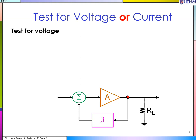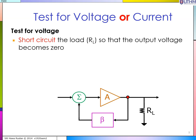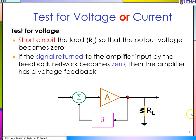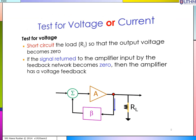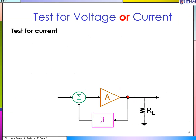For the test for voltage, you short-circuit the load RL. When it is short-circuited, your output Vo is tied to ground, so it becomes zero. Since the signal returned from the output to the feedback network is zero, and we are testing for voltage, this type of amplifier has a voltage feedback.